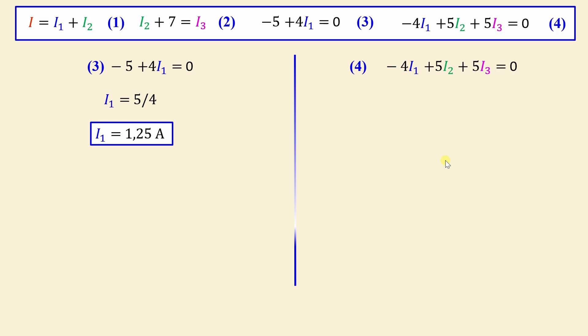We go now to equation number 4. We have negative 4 I1 plus 5 I2 plus 5 I3. We can rewrite equation number 4 to have 5 I2 is equal to 4 I1 minus 5 I3. By replacing I1 with its value and we divide the whole equation by 5, we obtain I2 is equal to 1 minus I3. I will call this equation A.